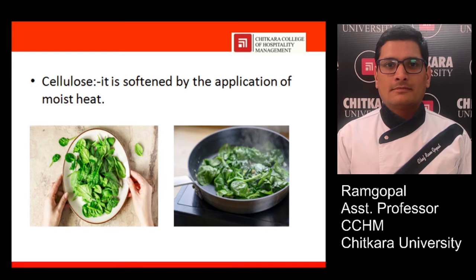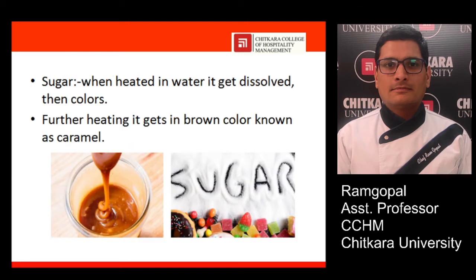Cellulose is also a type of carbohydrate. Cellulose is not soluble, but it is affected by heat. By the application of moist heat, cellulose will start to wilt and soften. As you can see in the picture, the first image shows the leaves of fresh spinach, and as you apply heat they get wilted and become easily digestible. We can digest uncooked spinach as well, but it takes time. When you cook any cellulose or plant product, the application of heat softens it so the body can easily digest it.